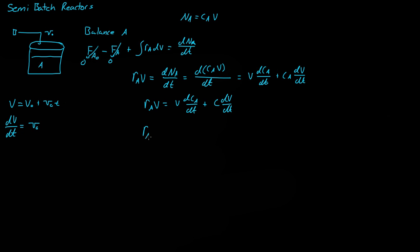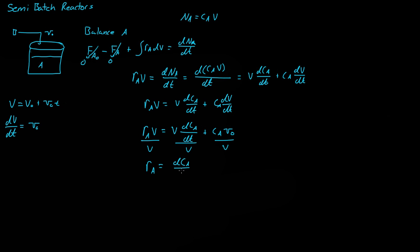Substituting, we get R_A times the volume equals V·(dC_A/dt) plus C_A times nu-naught. The next step is to divide everything by V to simplify, giving us R_A equals dC_A/dt plus C_A times nu-naught all over V.